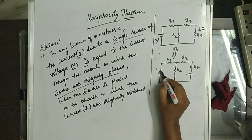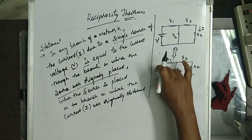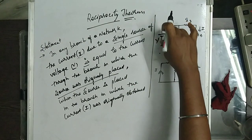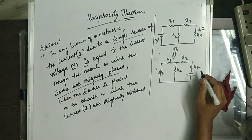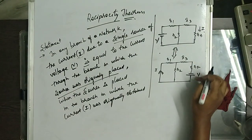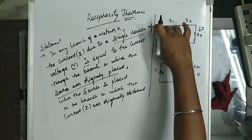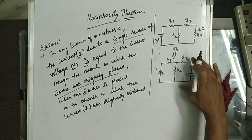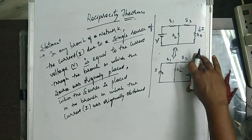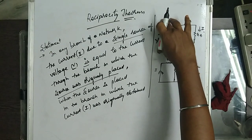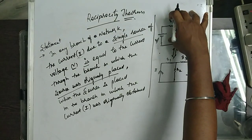The response is equal to the current in the branch where the voltage source is initially placed. Now we are seeing the response in that voltage source branch, when this voltage source is replaced in the branch where the response is to be obtained. This is called the reciprocal circuit. The original circuit and the reciprocal circuit — for the same T network, we take the reciprocal network.